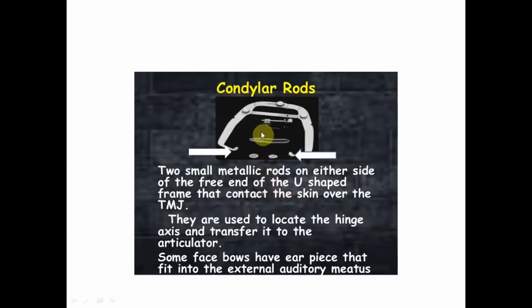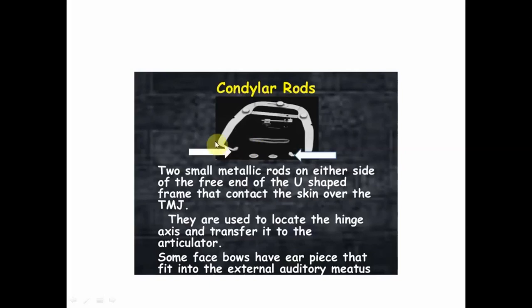These are the condylar rods — two metallic rods on either side of the free end of the U-shaped frame that contact the skin over the temporomandibular joint. Some facebows have an earpiece attached to this part, which is attached to the external auditory meatus. The condylar rods are positioned over the condyle or the skin of the TMJ.